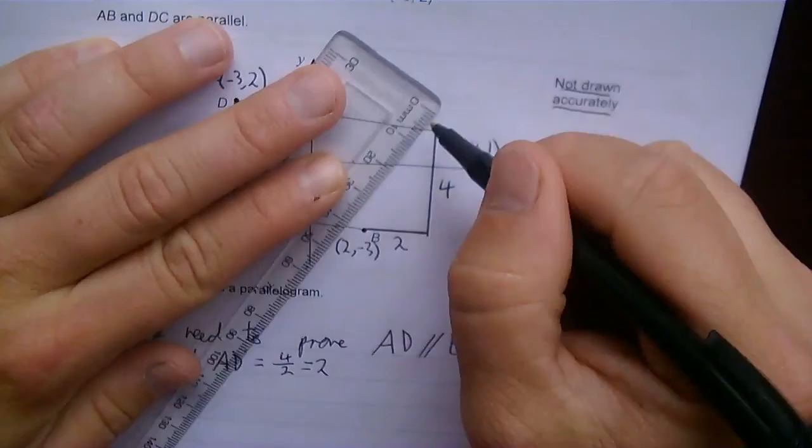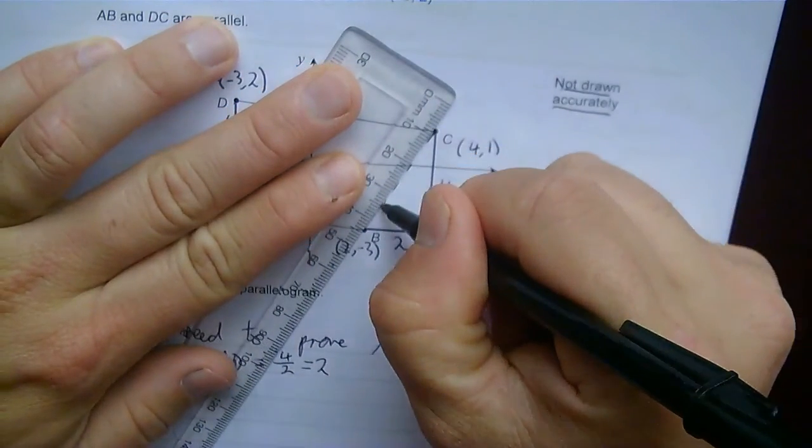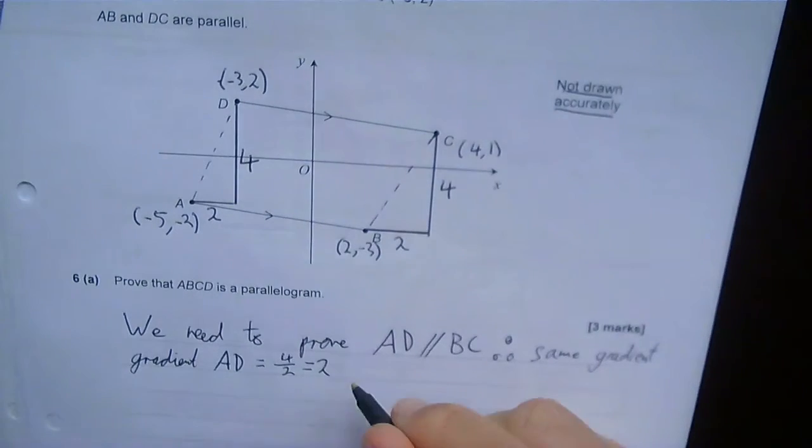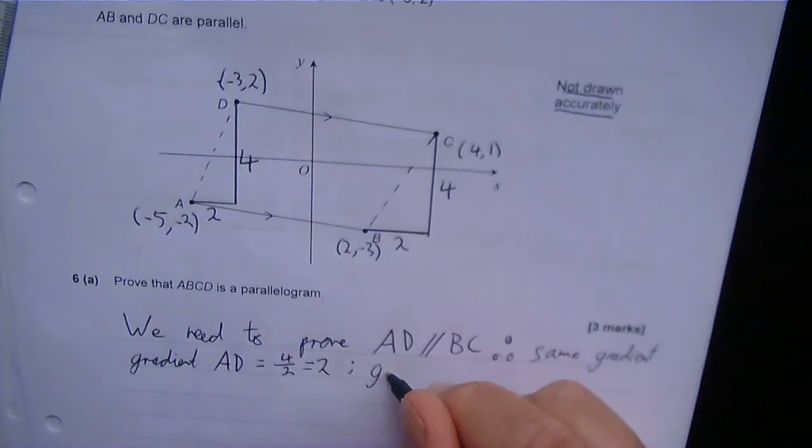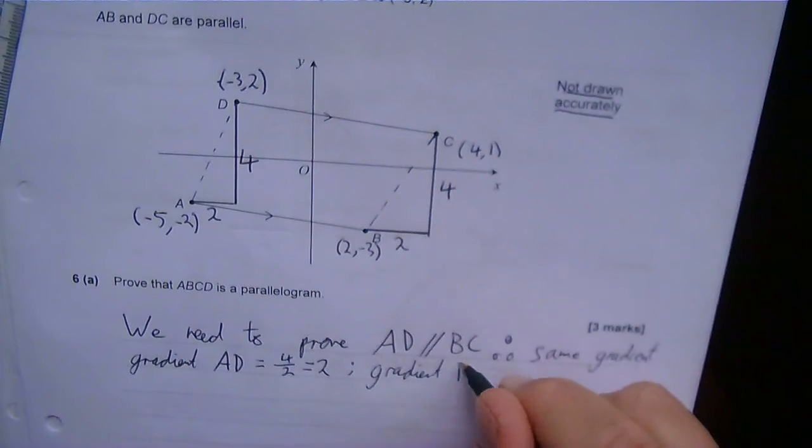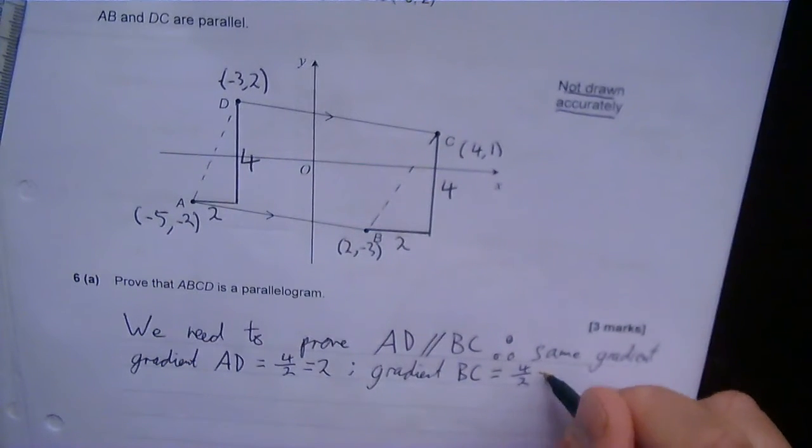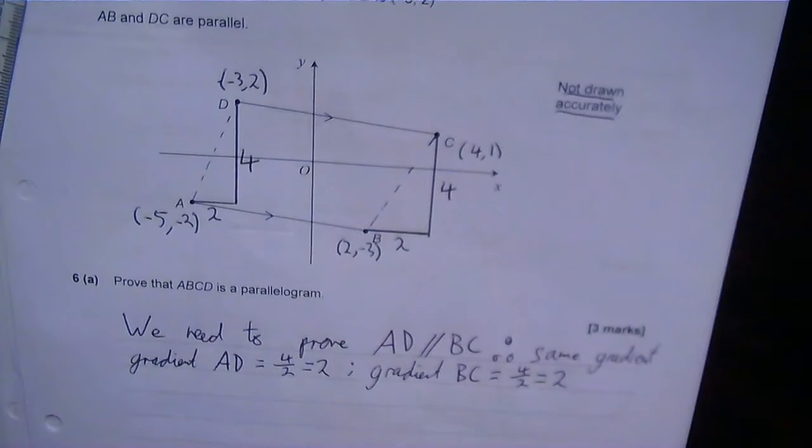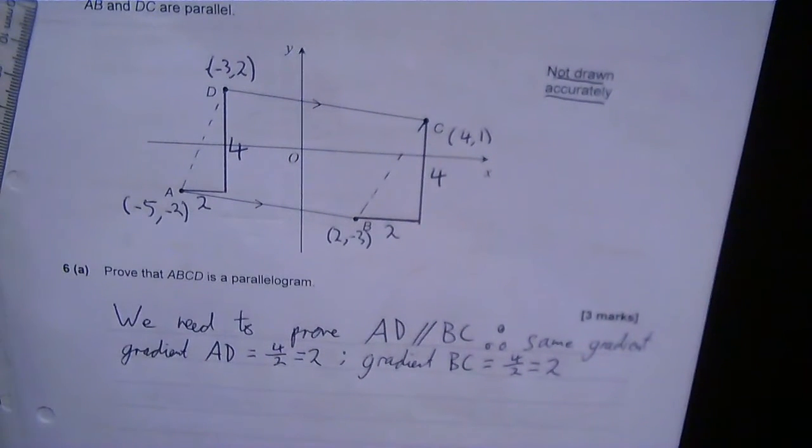So my gradient of BC is 4 over 2, which is 2. So they have the same gradient. So I've proved that they're a parallelogram.